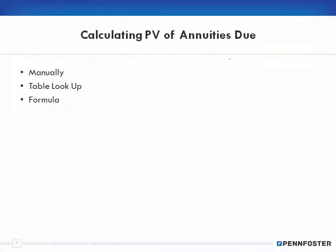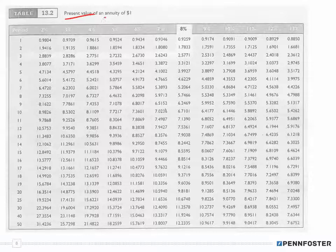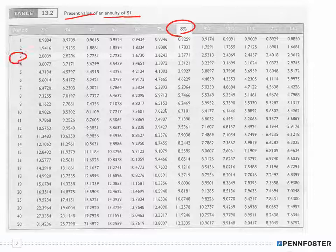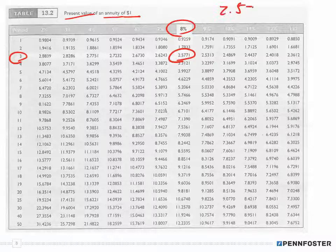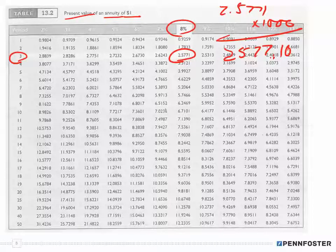Calculating the present value of an annuity due is similar to a lump sum or ordinary annuity. You can do it manually or use the formula, but I'll use the table lookup. The table shows the present value of an annuity of one dollar. For example, at 8% for three periods, the factor is 2.5771. You multiply that by your payment of $1,000 to get $2,577.10.